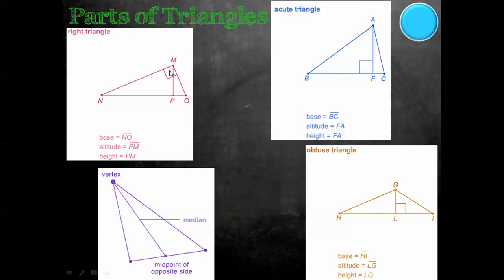The height is also PM. In the acute triangle, the base is BC, the altitude is FA, and so is the height. See how it's making a 90 degree angle right there. And with an obtuse triangle, the base is HI, the altitude is LG, and the height is LG. Notice that the base and the altitude are always at a 90 degree angle to each other.